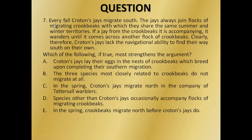Let's move on to the seventh question. Every fall, Croton's jays migrate south. The jays always join a flock of migrating crookbeaks with which they share the same summer and winter territories. If a jay becomes separated from the crookbeaks it is accompanying, it wanders until it comes across another flock of crookbeaks. Clearly, therefore, Croton's jays lack the navigational ability to find their way south on their own. Which of the following, if true, most strengthens the argument?